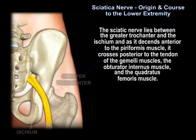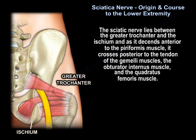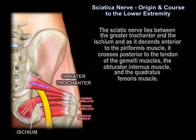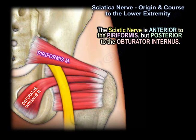The sciatic nerve lies between the greater trochanter and the ischium, and as it descends anterior to the piriformis muscle, it crosses posterior to the tendon of the gemelli muscles, the obturator internus, and the quadratus femoris muscle. So the sciatic nerve is anterior to the piriformis, but posterior to the obturator internus.